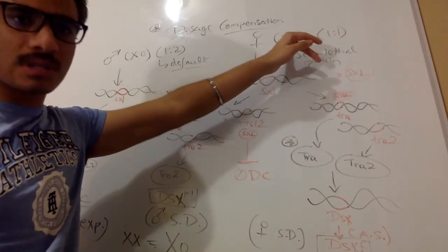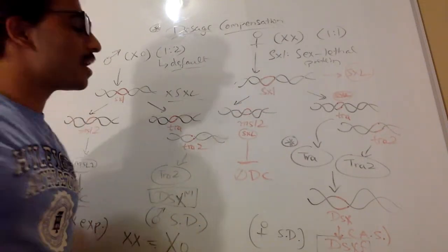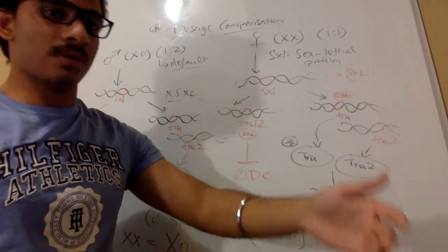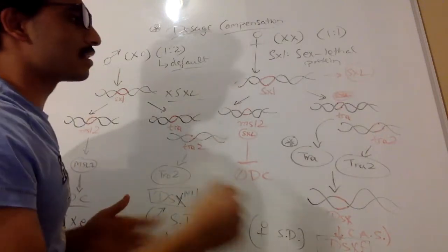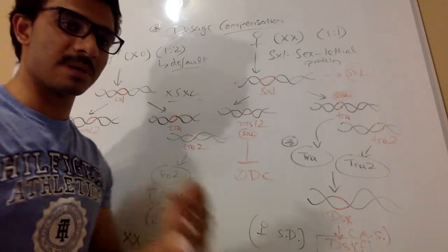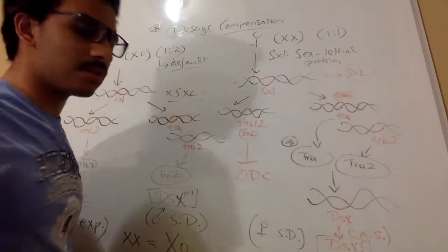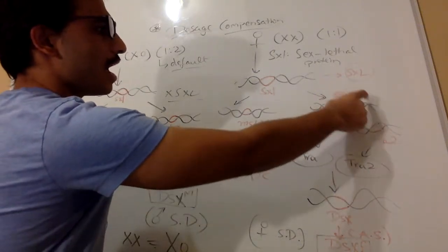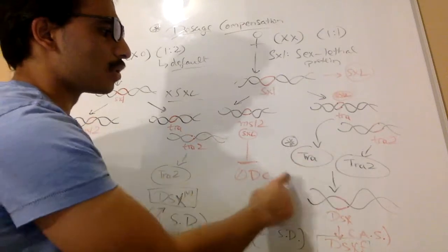In females we have two X chromosomes. This causes more expression of the SXL gene, which we call the sex lethal gene. Since there is more expression of the SXL gene, we produce SXL protein, or the sex lethal protein. This protein acts as a transcription factor for downstream genes, which are expressed in order. Sex lethal protein will act as a transcription factor for the TRA gene.